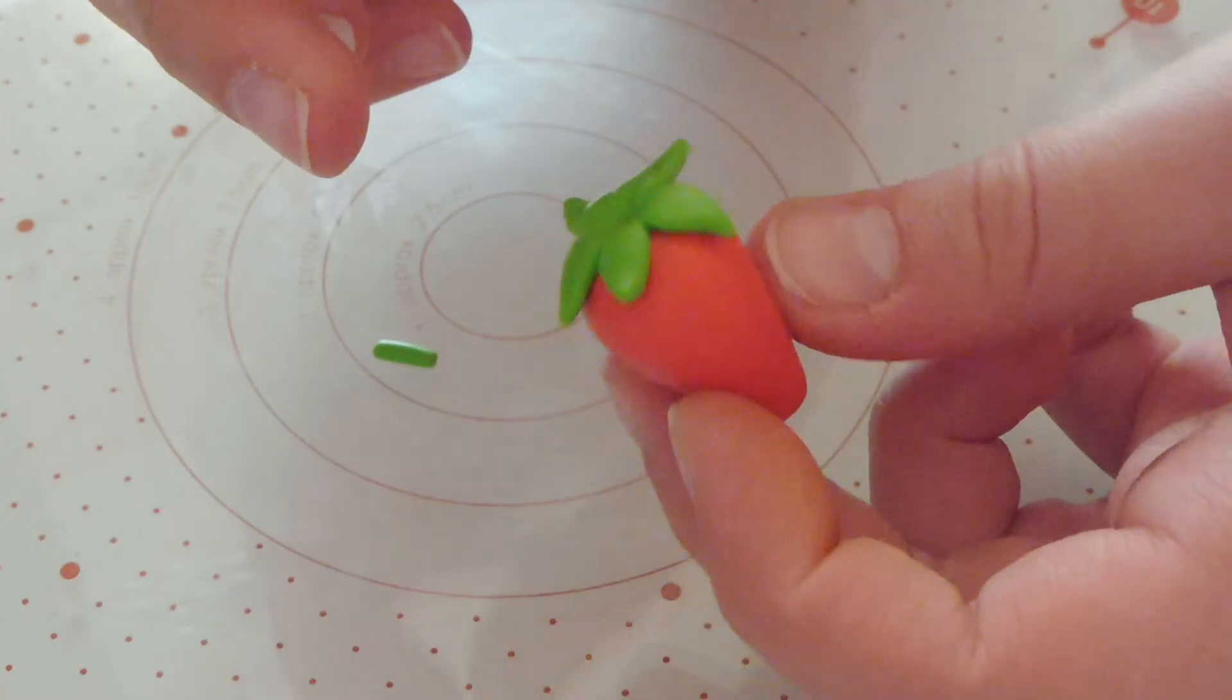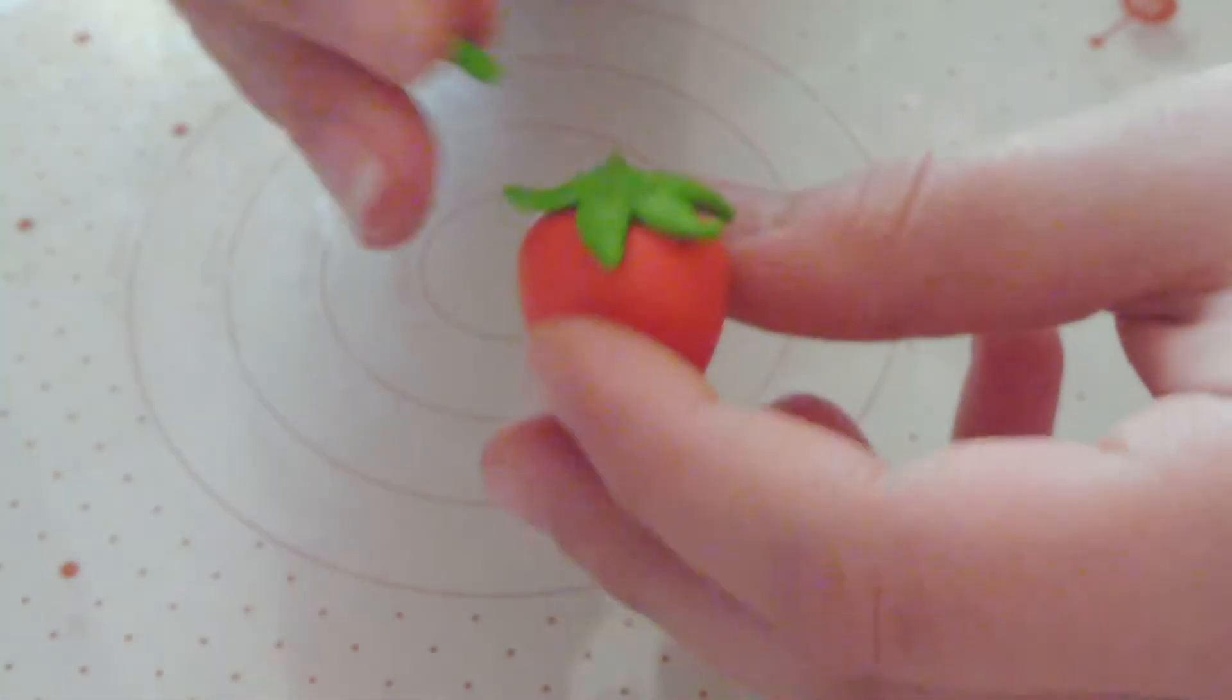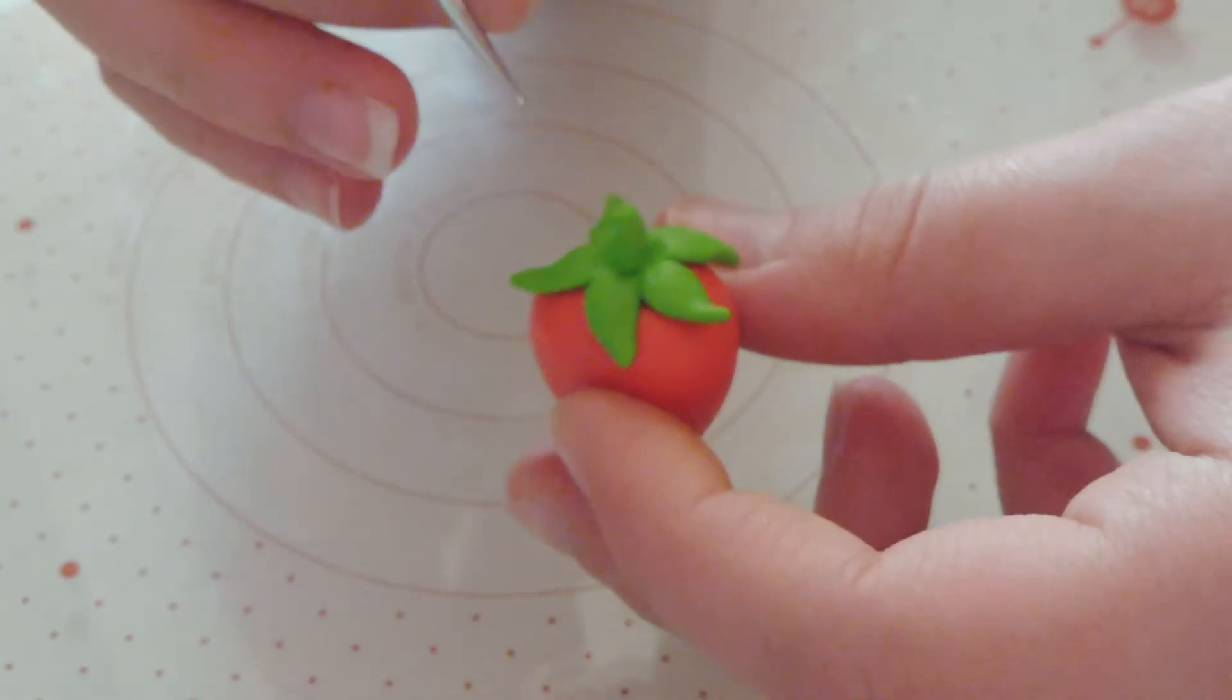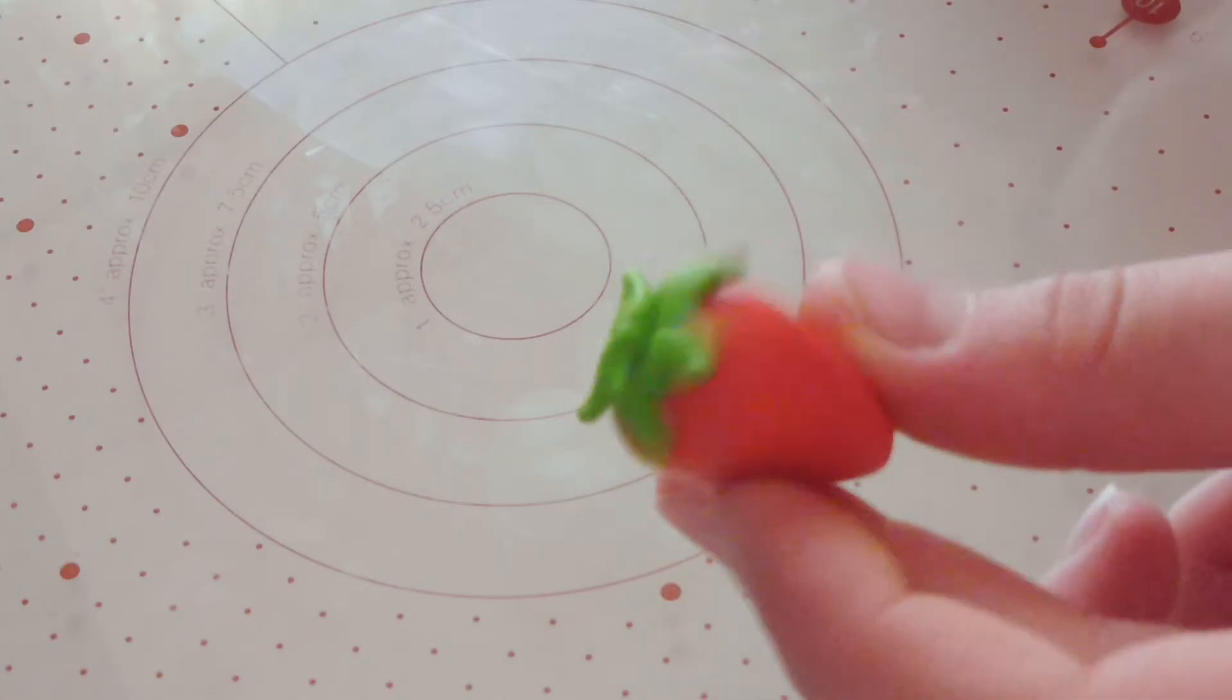So next we're just going to take the stalk and place it in the center of our leaves. And I'm also going to use a ball tool to kind of push it down as well. So here we have our strawberry basically.